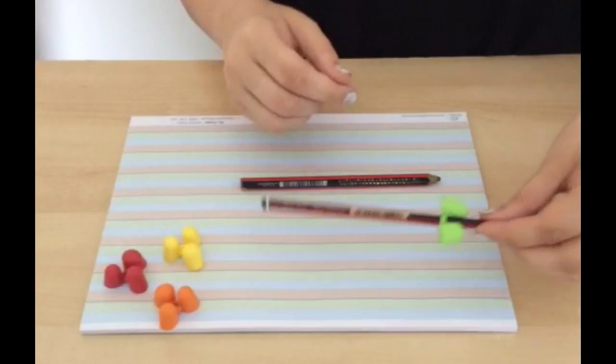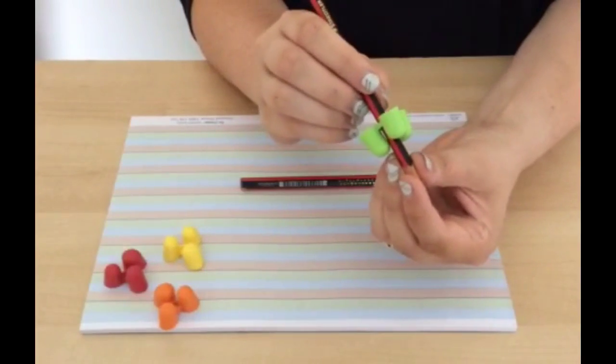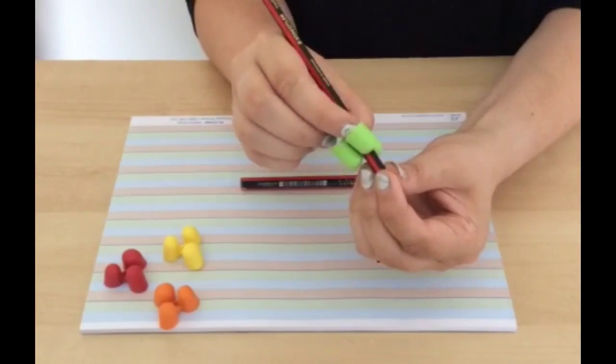Of course, most children won't look at those letters on the grip, but it's still helpful for adults to know if they're working on writing with their children.